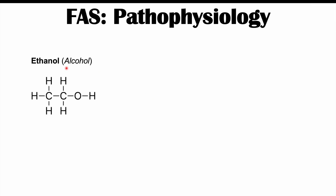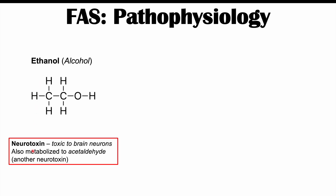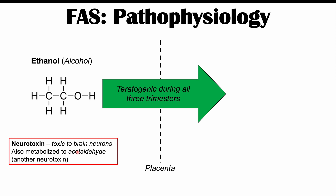Regarding pathophysiology: when the mother consumes alcohol, ethanol is metabolized into an intermediary called acetaldehyde, which is itself a neurotoxin. Both ethanol and acetaldehyde are neurotoxins — toxic to brain neurons even in adults. These two substances can easily cross the placental barrier and enter fetal tissues, and they are teratogenic during all three trimesters of pregnancy, interfering with proper embryonic development.